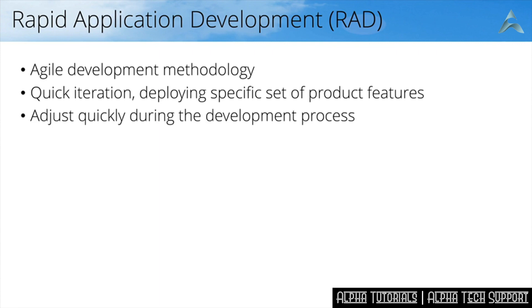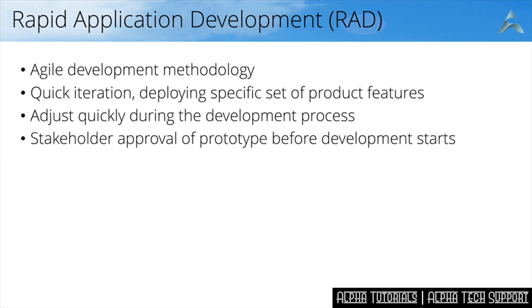Rapid application development gives you a lot of freedom. You first start with the most important functionality, and then while you're building towards an end product, you can decide which features actually change or become obsolete. The stakeholder is the business representative, prioritizing which features need to be implemented first. Within rapid application development, prototyping is very important, and the idea is that the stakeholder needs to give approval of the prototype before the actual development begins.